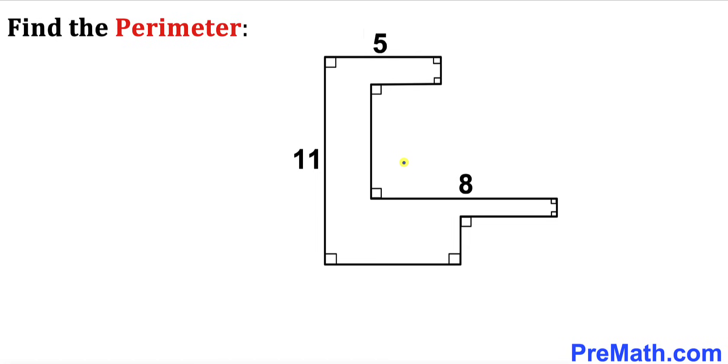Welcome to PreMath. In this video we have this interesting shape as you can see in this diagram such that its horizontal side lengths are 5 and 8 units whereas its vertical side length is 11, and furthermore keep in mind that